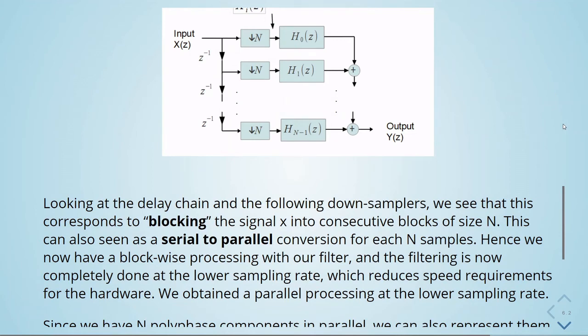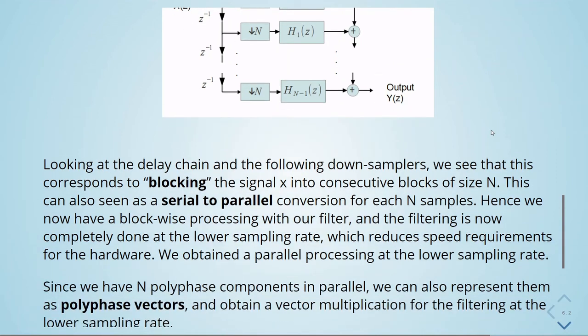Now we have a block-wise processing with our filter, and the filtering is now completely done at the lower sampling rate, which will reduce speed requirements for hardware. We obtain the parallel processing at the lower sampling rate.